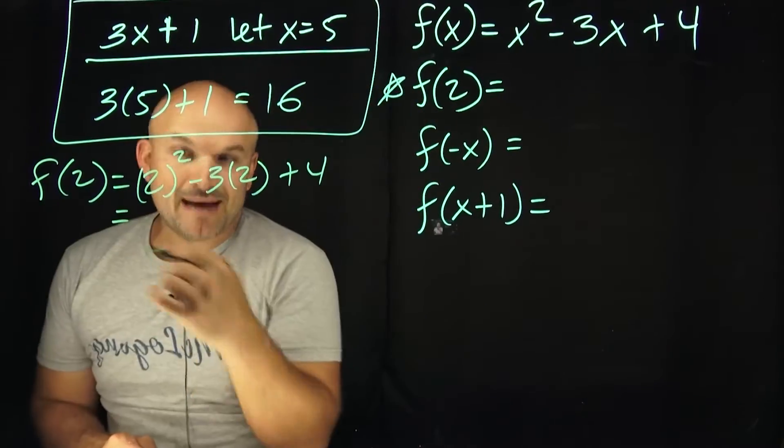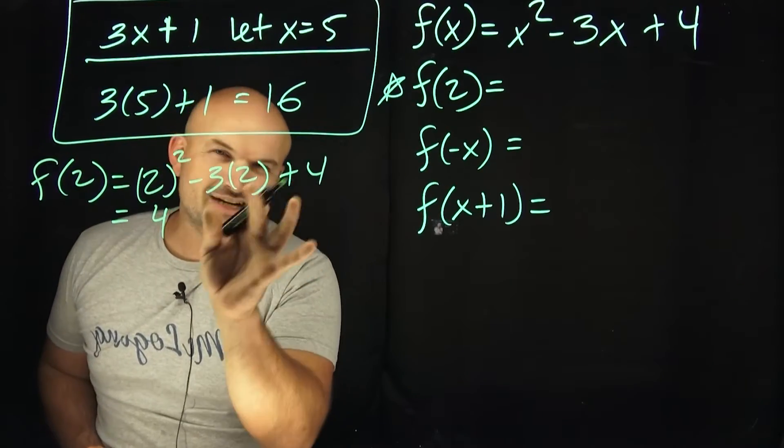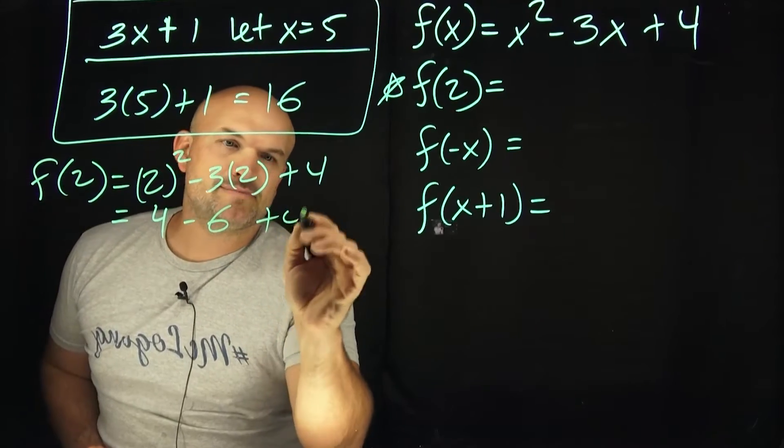And now, again, as I reminded you, just make sure that you follow your order of operations. We're going to square the 2 squared. This is going to be 4. We can actually multiply this, it's not going to impact it, so minus 6 and then plus 4.